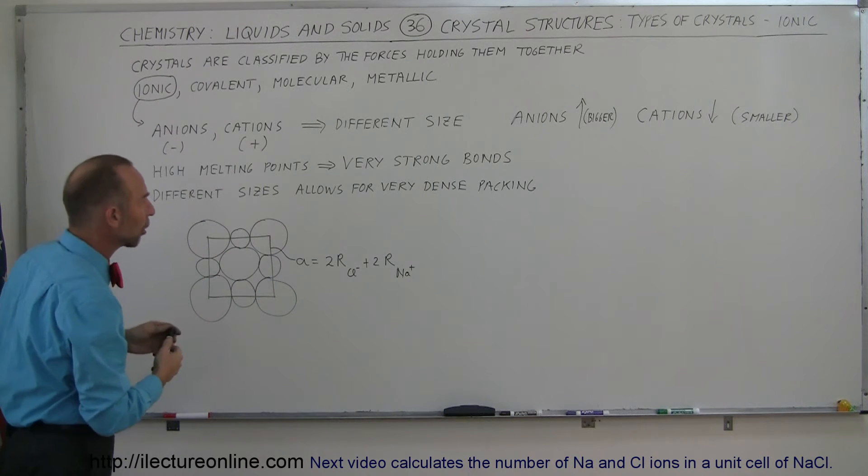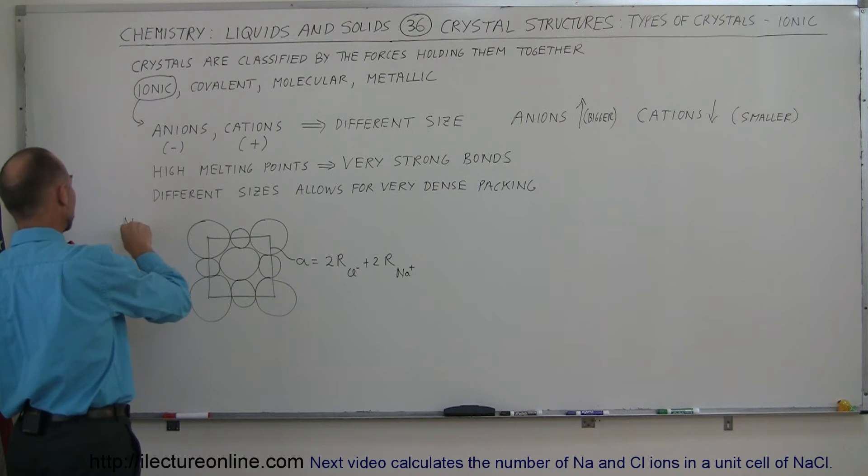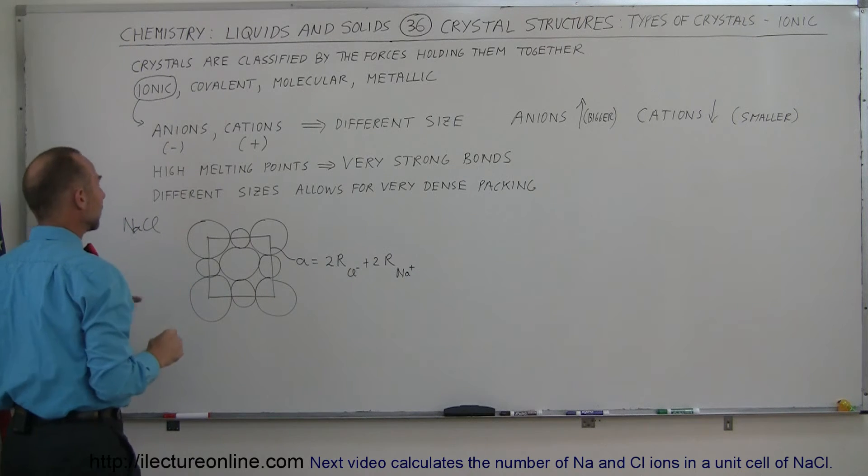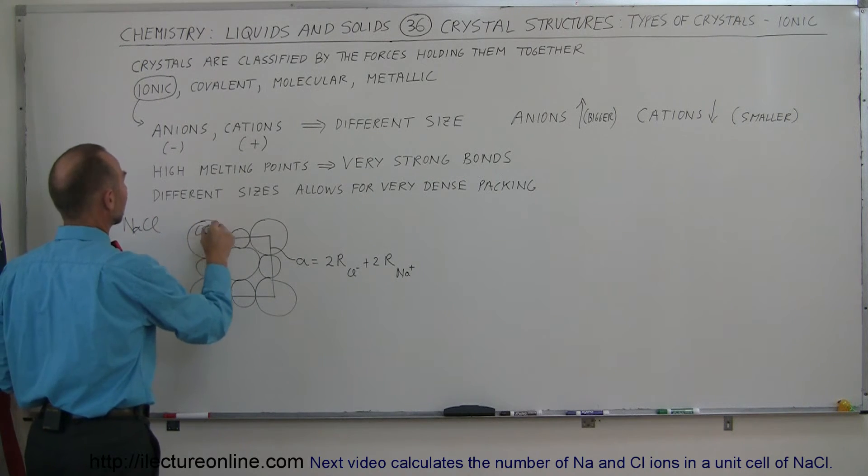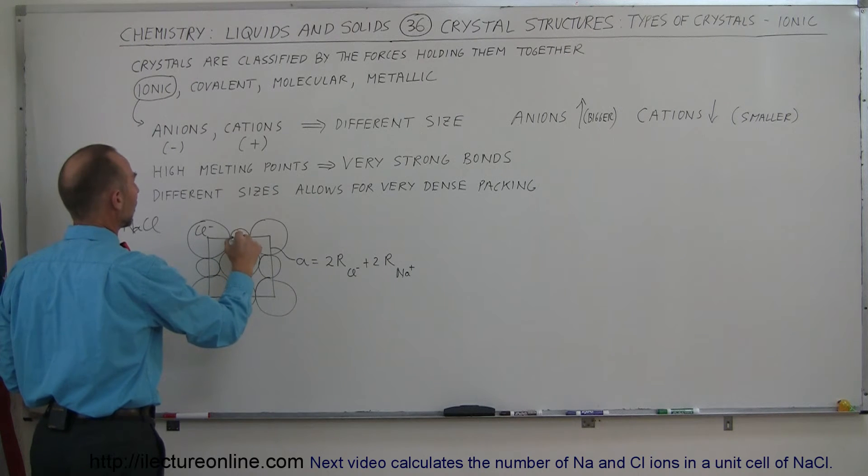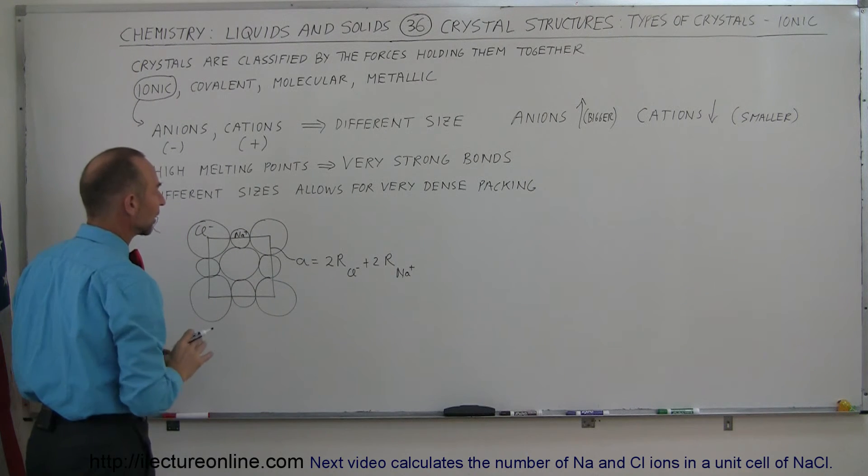Looks like that. And so these are the large negative chlorine ions, these are the small positive sodium ions, and see how they're arranged like that.